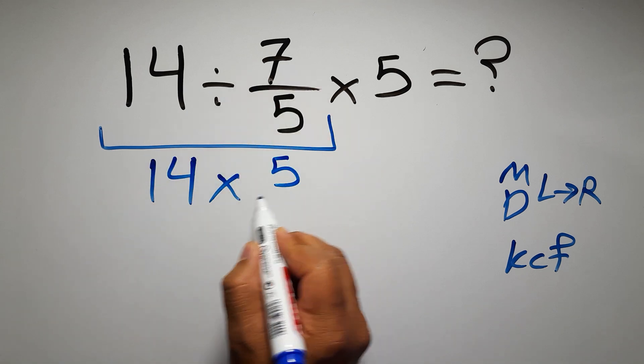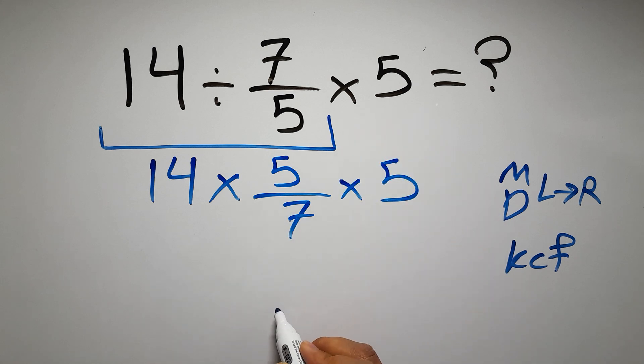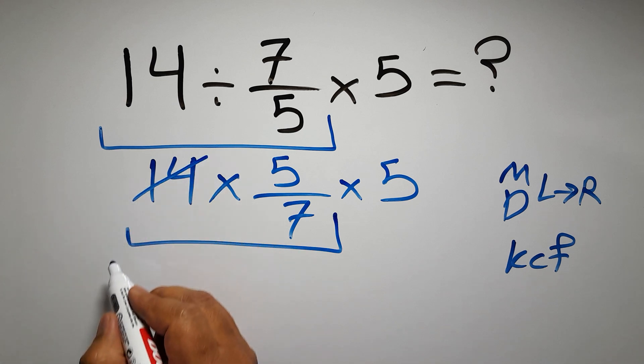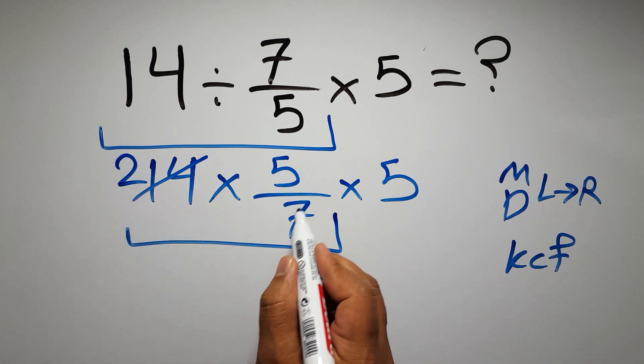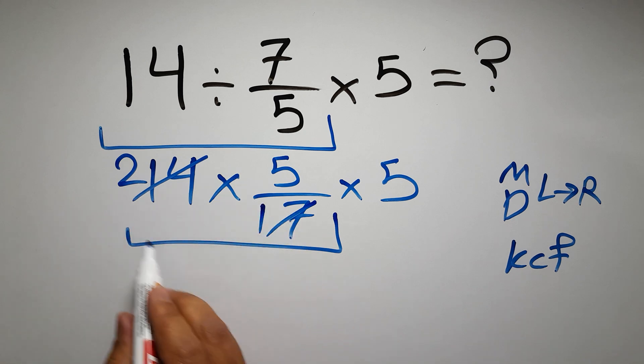And here we have times 5. 14 times 5 over 7. 14 divided by 7 gives us 2, and 7 divided by 7 gives us 1, so here we have just 2 times 5 over 1, which equals 10.